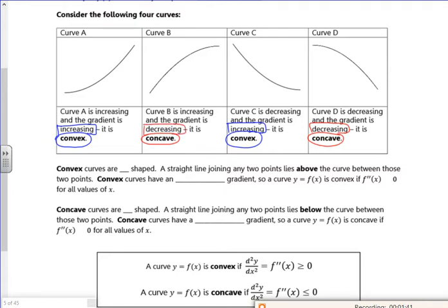Now then, if you imagine A and C stuck together, actually doing it is C and A first, you're going to get a curve which goes like that. So a straight line joining two points lies above the curve between those two points. Convex curves have an increasing gradient. So a curve is convex if the second differential is greater than or equal to zero. Now there is a little bit of dispute there whether it's greater than or equal to or if it's just greater than.